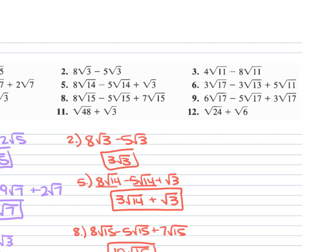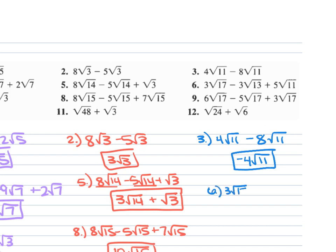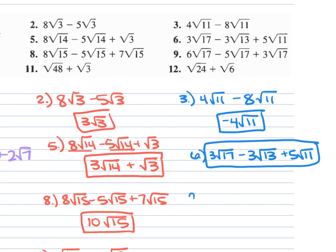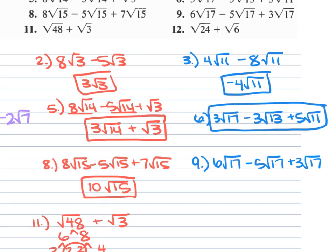Problem 3: 4 square root of 11 minus 8 square root of 11. 4 minus 8 is negative 4, keep the square root of 11, giving negative 4 square root of 11. Problem 6: 3 square root of 17 minus 3 square root of 13 plus 5 square root of 11. None of these are like terms, so we cannot combine anything and leave it as is. Problem 9: 6 square root of 17 minus 5 square root of 17 plus 3 square root of 17. 6 minus 5 is 1, plus 3 is 4 square root of 17.